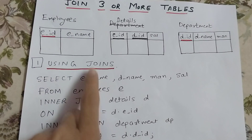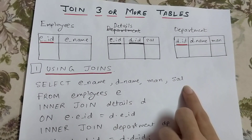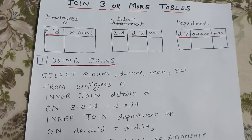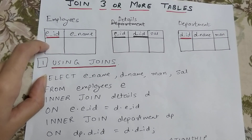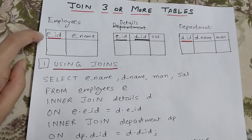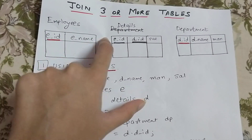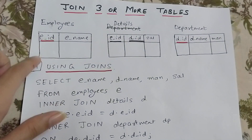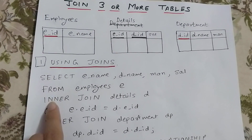So we write: SELECT E_name, D_name, manager, and salary. Then we write FROM employees E — giving an alias E to the employees table — INNER JOIN details D, joining these two tables and giving aliases E and D to them.